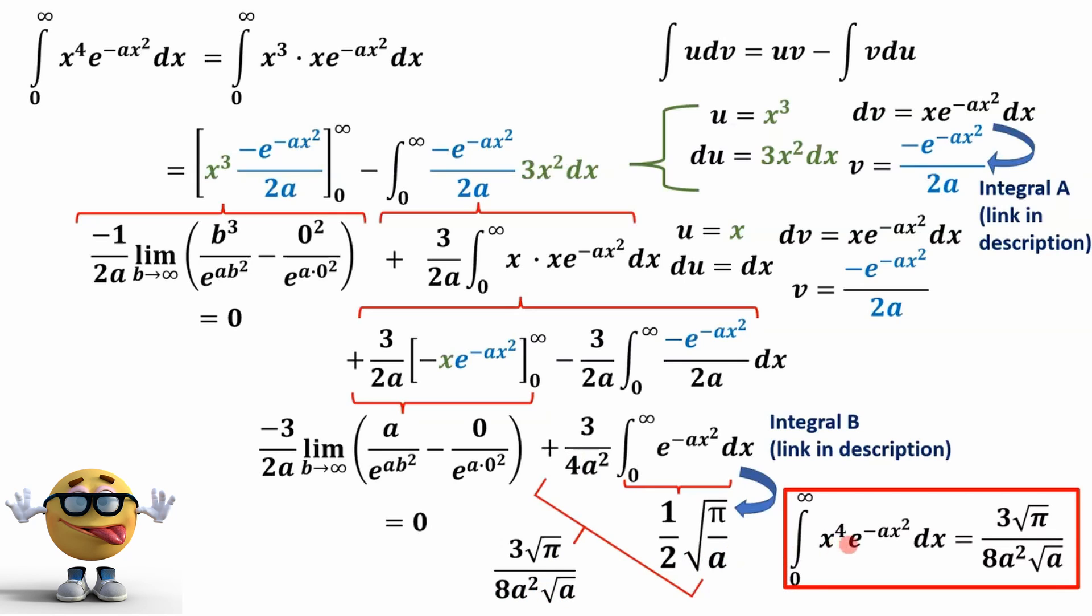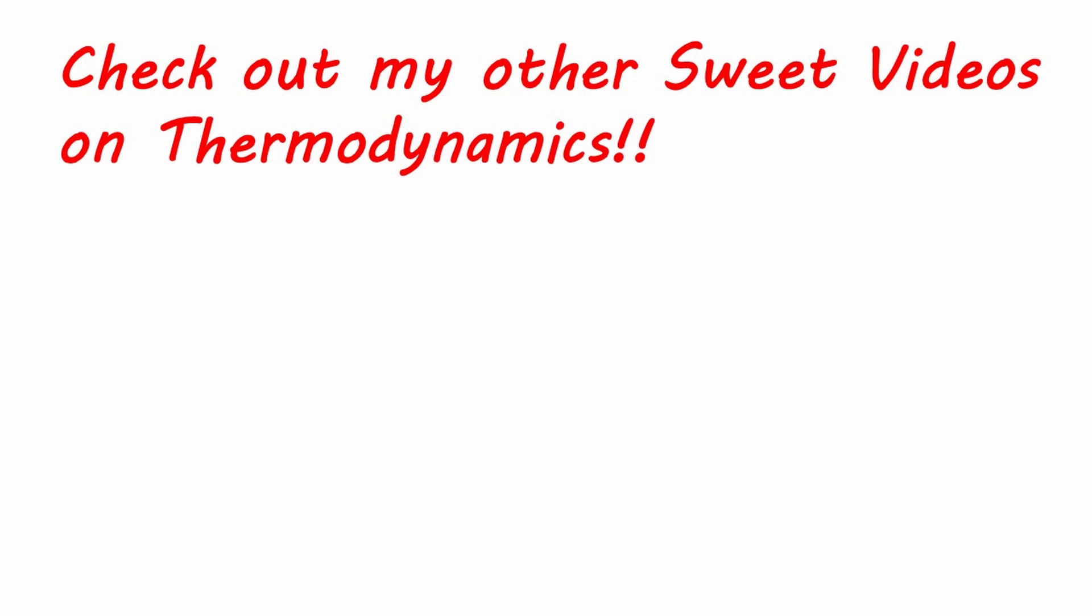So the integral of x to the fourth times e to the negative ax squared from zero to infinity is 3 root pi over 8a squared root a. All right, y'all, good luck on your midterms, final exams, assignments, all that stuff. Thanks for watching, and I'll see you in the next video. Cheers.